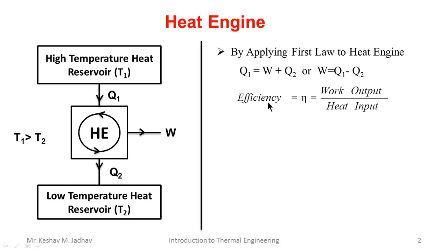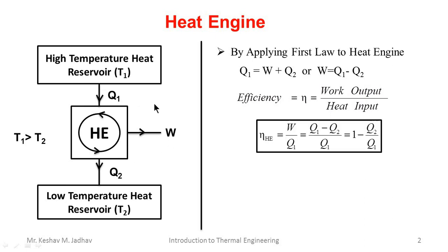The performance of a heat engine can be measured by a term called efficiency, denoted by the symbol eta. Efficiency is the ratio of work output divided by heat input. So for this heat engine, work output is W and heat input is Q1, so efficiency equals W upon Q1. Here W can be replaced by Q1 minus Q2, and if we simplify then we get efficiency of heat engine as 1 minus Q2 upon Q1.